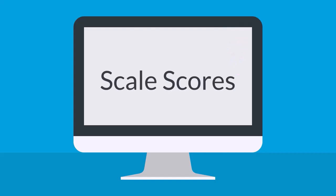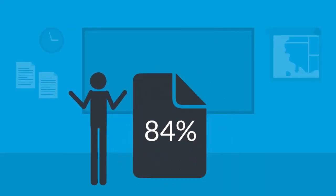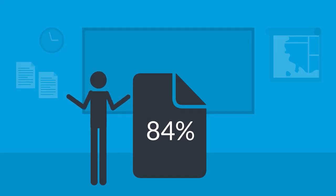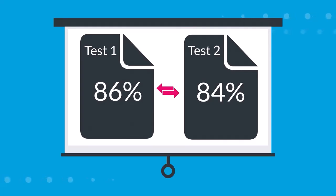Without scale scores, your students may feel like this. A student might say, on my last math test I got 86%. This time I got 84%, but the questions were a lot harder. I thought I learned so much in math — what went wrong? Why did my score go down? When tests are scored simply on the percent or number of questions correct, it's difficult to compare performance on one test to another because one test may have harder questions.